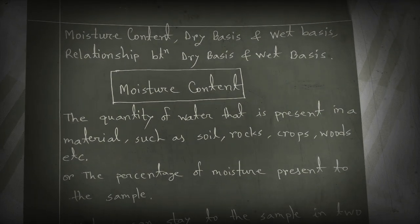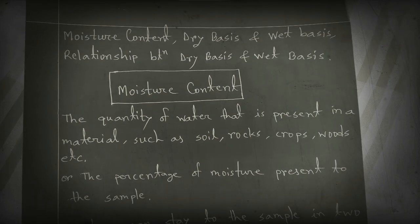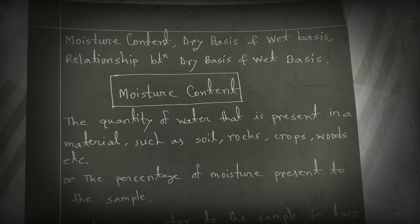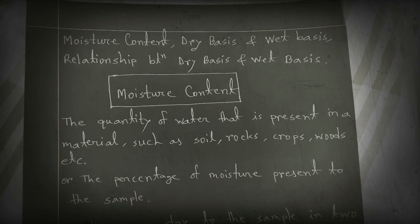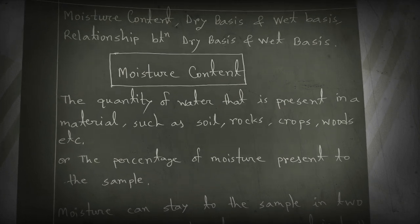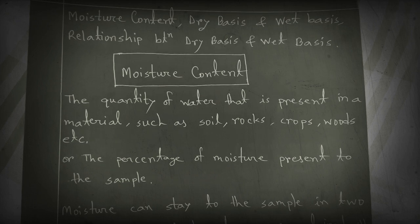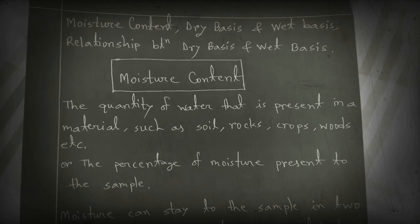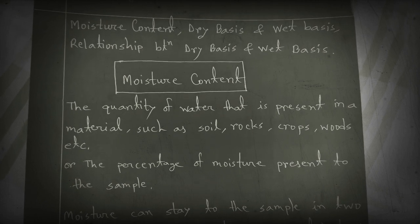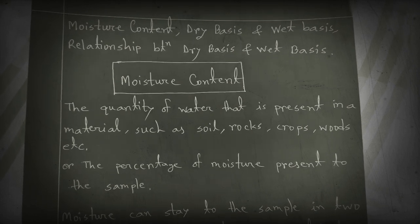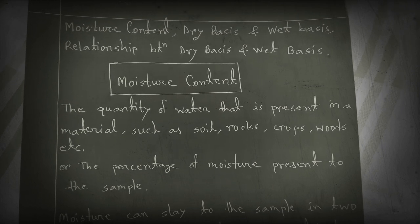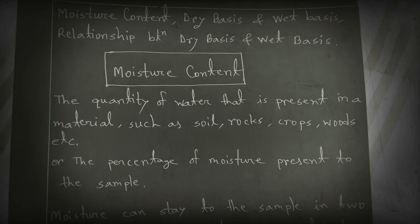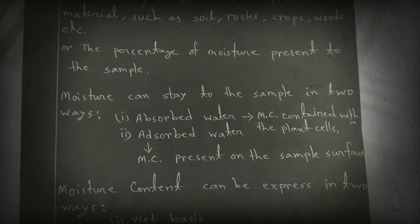Hello friends, today we are going to discuss moisture content — dry basis and wet basis moisture content — and the relation between them. Moisture content is defined as the quantity of water present in a material such as soil, rocks, crops, woods, etc., or the percentage of moisture present in a sample.